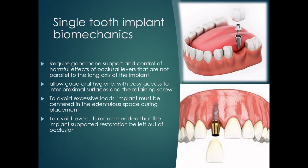Next, coming to single tooth implant biomechanics. Single tooth implants require good bone support. We also have to control the harmful effects of occlusal levers that are not parallel to the long axis of the implant. The prosthesis should be designed to allow good oral hygiene with easy access to interproximal surfaces and to the retaining screw. To avoid excessive loads, implants must be centered in the edentulous space during placement.